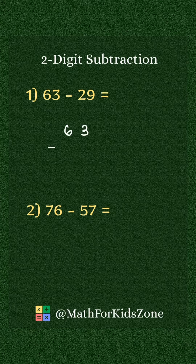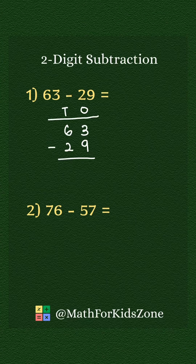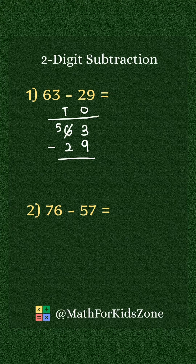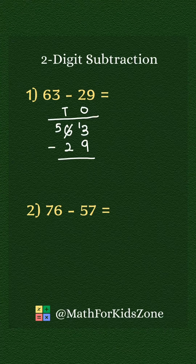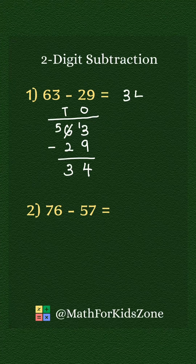63 minus 29. 10's on the left, 1's on the right. 3 minus 9, we need to borrow 10. Left 5 10's, that makes 13 minus 9 equals 4. 5 minus 2 equals 3. Answer is 34.